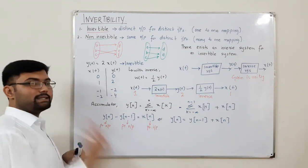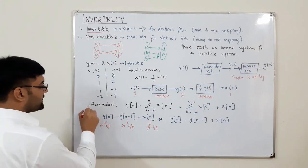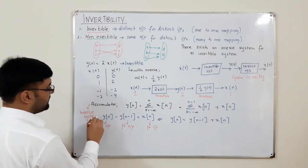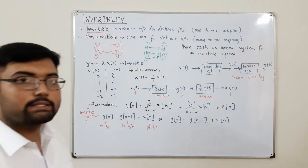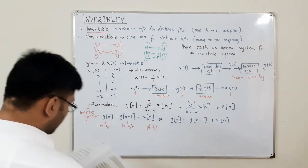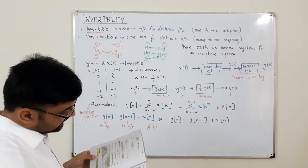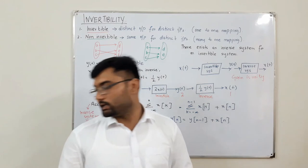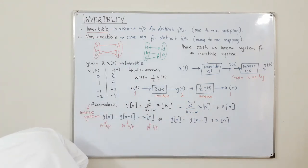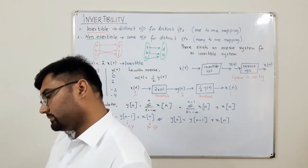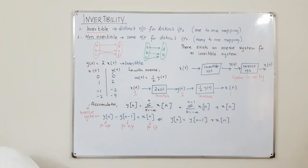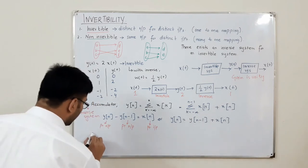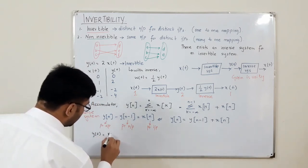Since the inverse system exists and we recover the present input, the accumulator is an invertible system — and its inverse is x[n] = y[n] - y[n-1]. The concept of invertibility is important in many contexts; the major application is in encoding and communication processes. Now let's look at some simpler examples. Consider y(t) = x²(t).